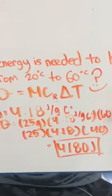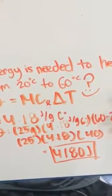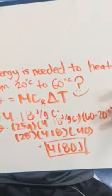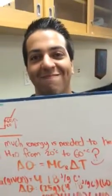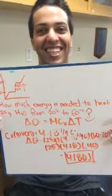So that simplifies to 25 times 4.18 times 40, which comes out to be 4180 joules. And that's how you do the problem.